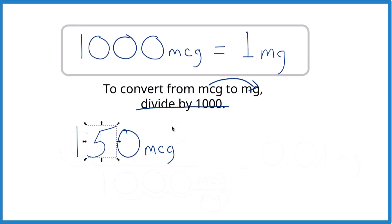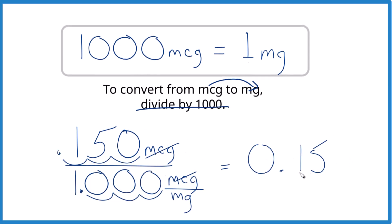All right, one more. Convert 150 micrograms to milligrams. Give it a try. We end up with 0.15 and these canceled out. So we have milligrams. So that's how you convert from micrograms to milligrams.